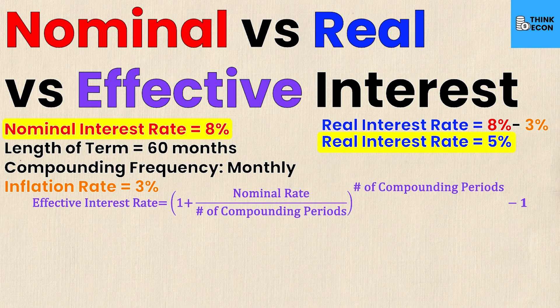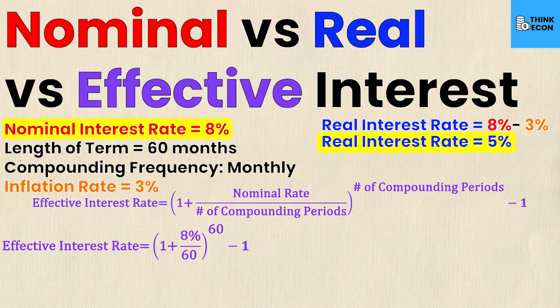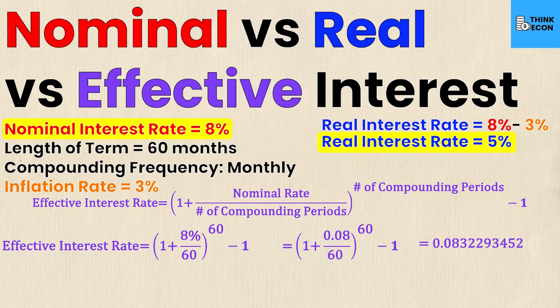Now let's calculate the effective interest rate using the formula. It equals one plus eight percent — the nominal rate — divided by sixty compounding periods, raised to the power of sixty, minus one. Converting eight percent to a decimal gives us: (1 + 0.08 / 60)^60 − 1. Plugging this into a calculator gives a value of approximately 0.0832293452.